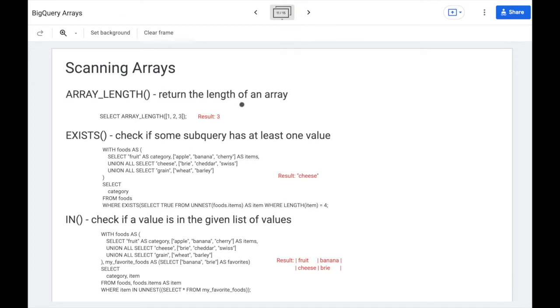Okay, so what other operations can you do with arrays? You can get the length of an array. You can check if some subquery has at least one value. And for this subquery, you can say from unnest of an array. And in works very similarly. So you can use unnest after in. So you would normally be used to saying in a hard-coded list of values, but this can actually be an array.